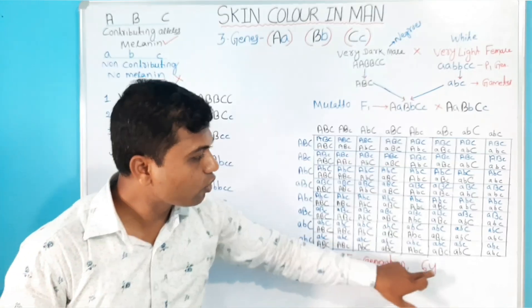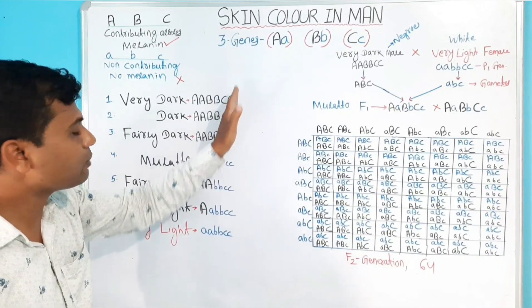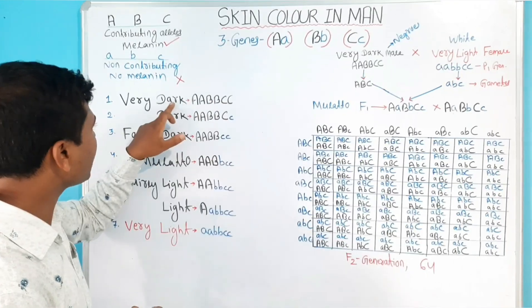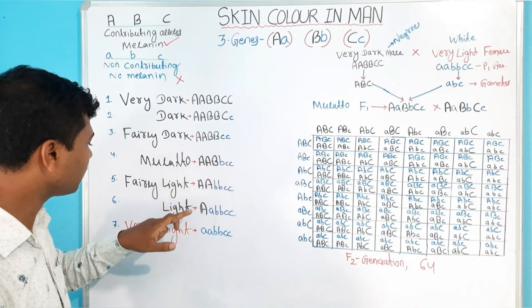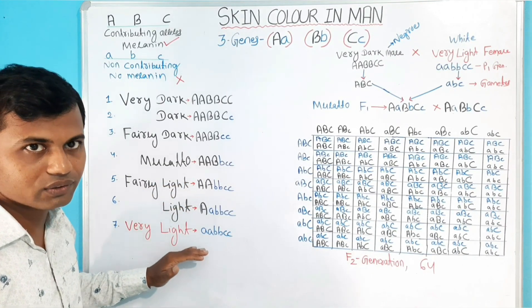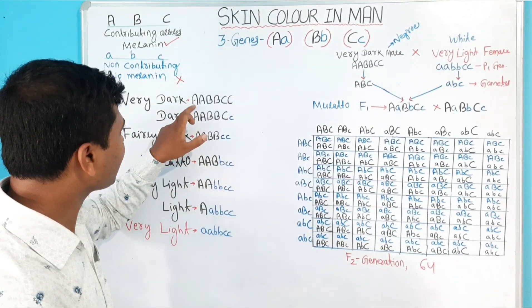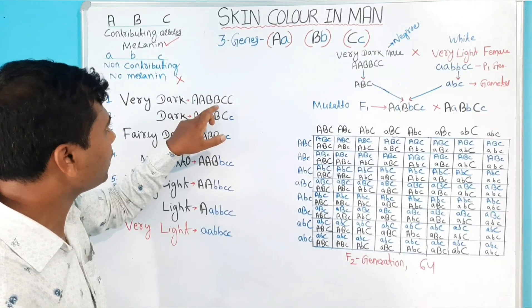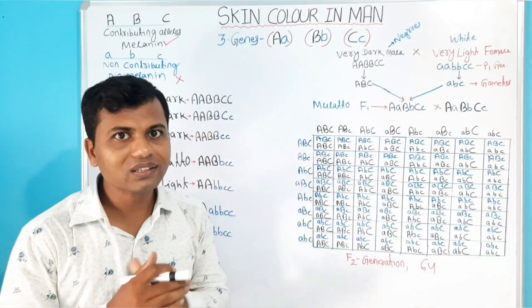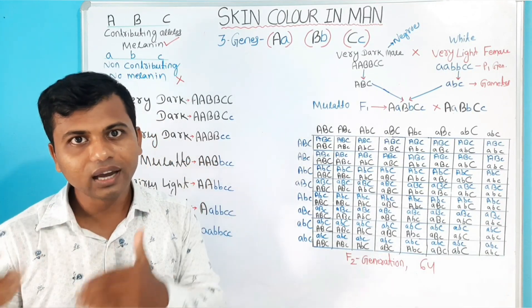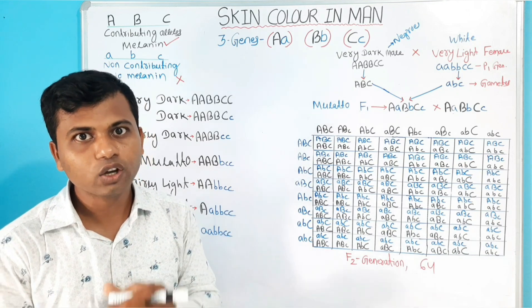The 64 offspring produced in the F2 generation show seven types of phenotypes: very dark, dark, fairly dark, mulatto, fairly light, light, and very light. When a person has all six contributing alleles (AABBCC), the person appears very dark, because all contributing alleles participate in the synthesis of melanin pigment.